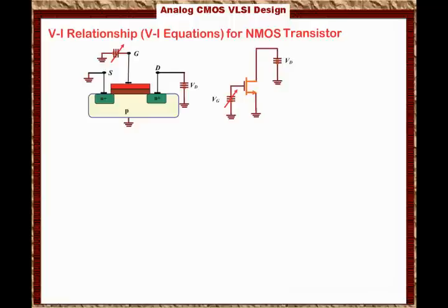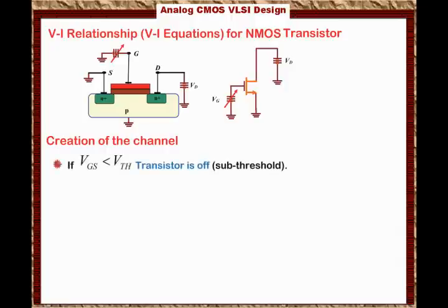In order to find the voltage-current relationship, the first thing we have to do is look at the creation of the channel. When can we create a channel? From our previous discussion, we stated that if VGS is less than VTH, less than the threshold voltage, the transistor is off — basically it's in the sub-threshold region. For now, we say the transistor is off if it is in the sub-threshold region.